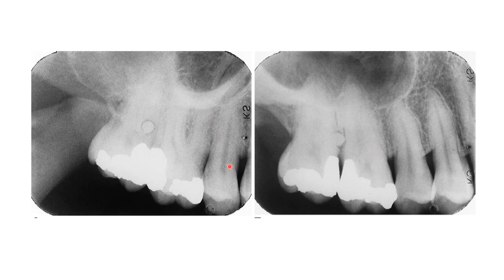We take another radiograph and change our horizontal direction. We can see the coronoid process of the mandible, which means we came in from a distal direction. The object, which was between the two molars, moved distally when we came from a distal direction — it moved with our direction of movement — meaning it is located on the palatal surface. Had this lesion moved against our movement, going mesially when we went distally, it would mean it is located on the buccal surface.